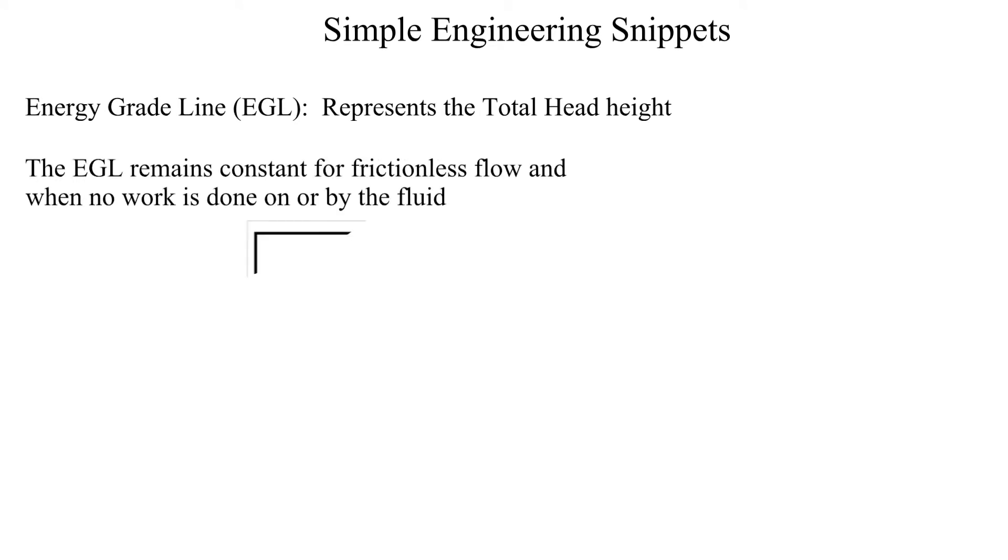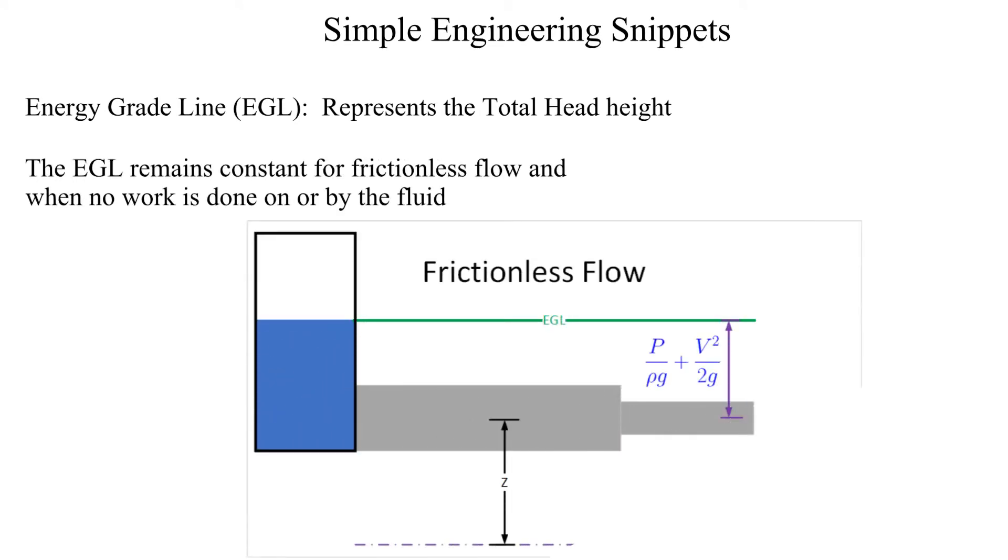Let's start with the energy grade line. The energy grade line represents the height of the total head. For frictionless flow and with no pumps or turbines it is a horizontal line.